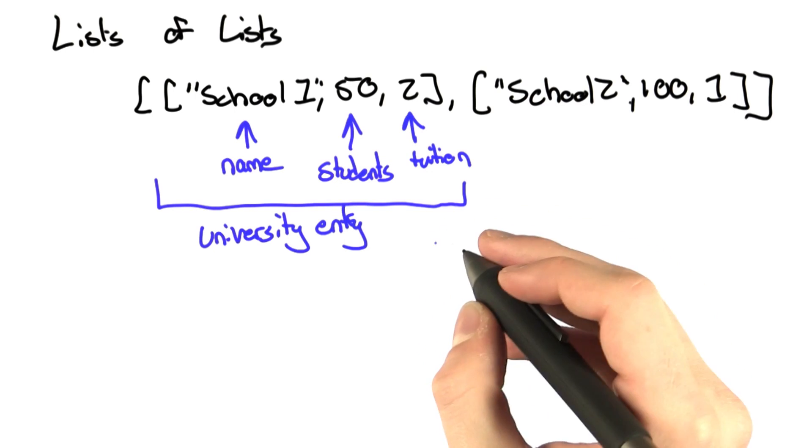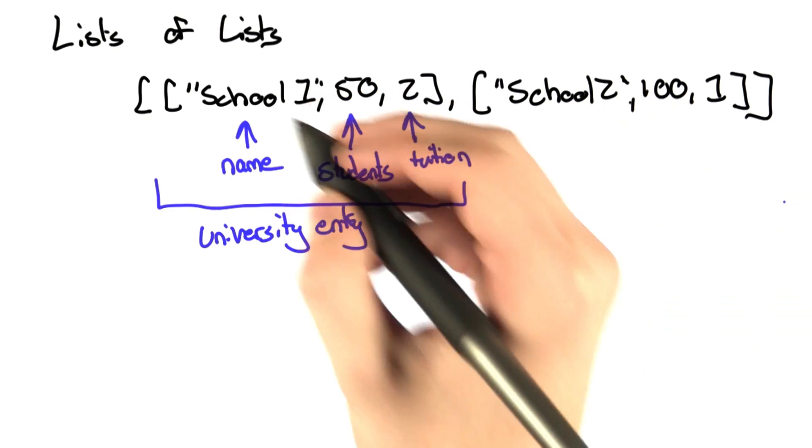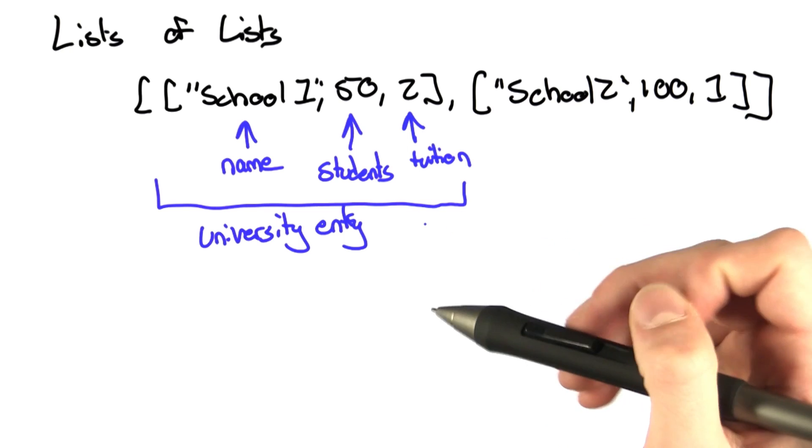In this problem, we're given a new data structure that is a list of universities where each entry is another list that contains the name of the university, the number of students that attend that university, and the tuition cost.